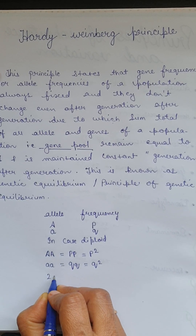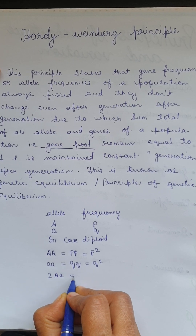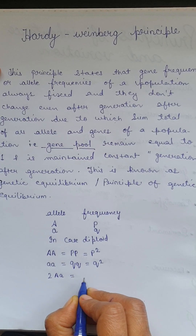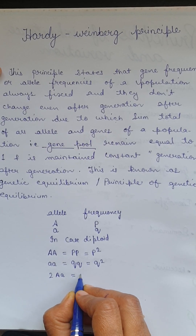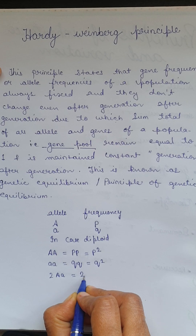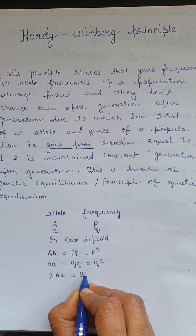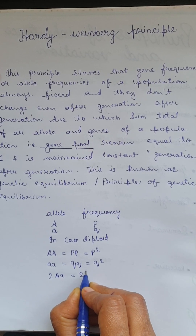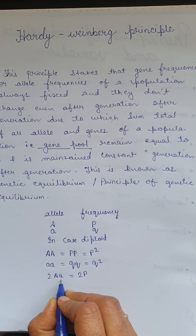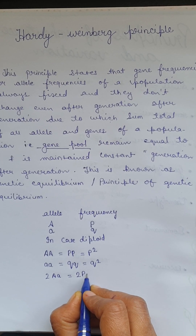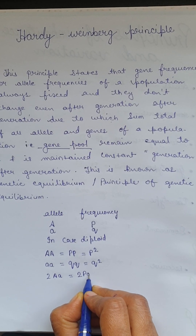Now, 2 capital A small a — in the form of frequency, you can write this as 2PQ: in place of capital A write P, and in place of small a write Q.